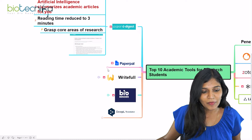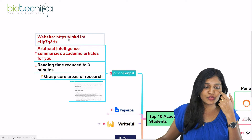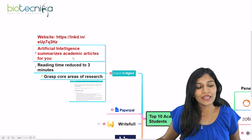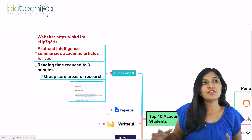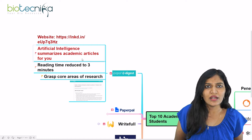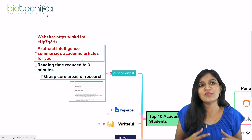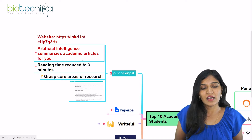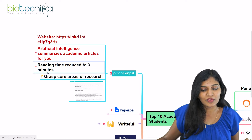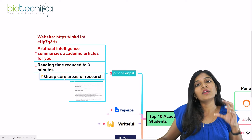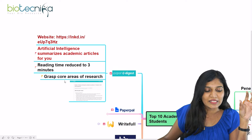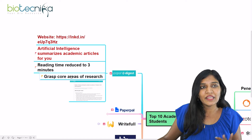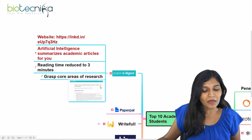Paper Digest is an AI which helps you to summarize any academic articles for you. If you're finding it very difficult to read very large articles, this will make you read those articles within a very short period of time — it condenses the articles so you understand the crisp content. Reading time is definitely going to reduce to within three minutes. You'll get to know what the research paper is exactly about.